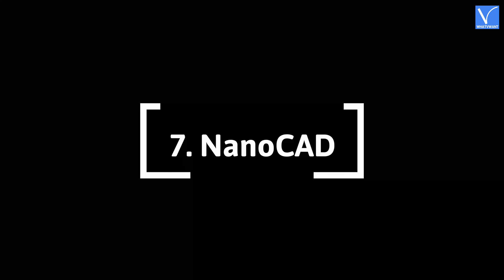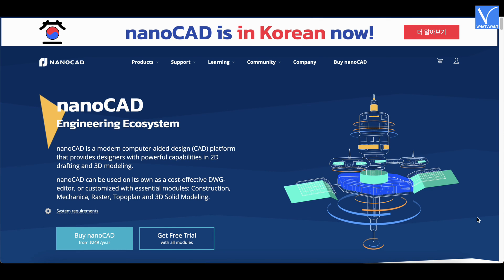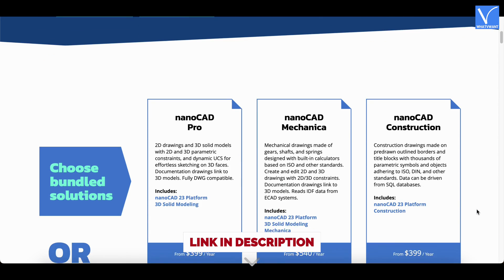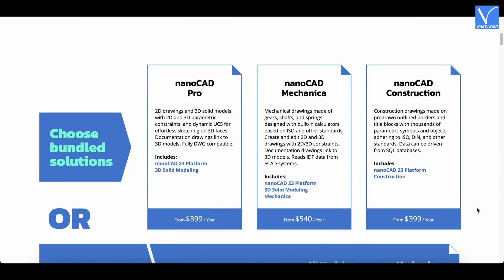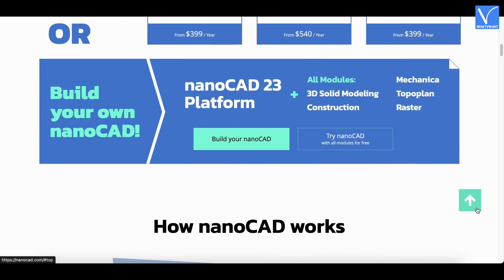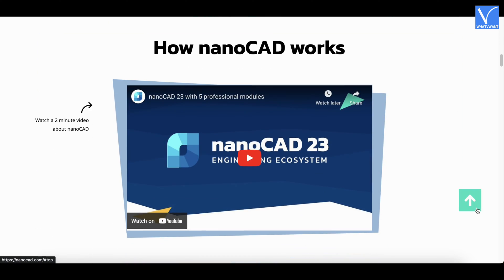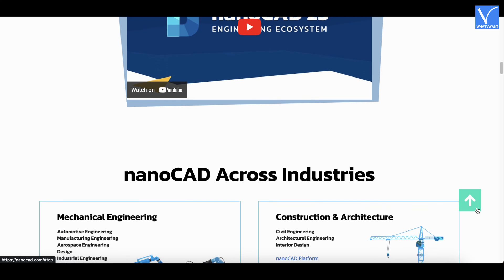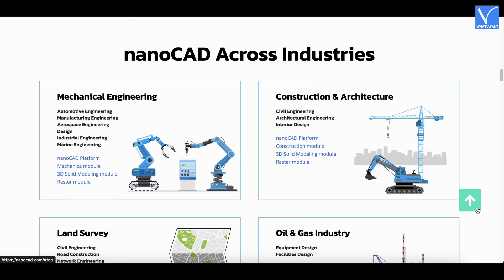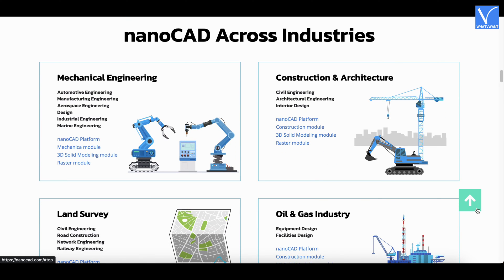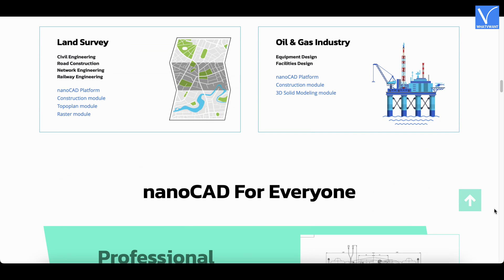Number 7: NanoCAD. NanoCAD is a budget-friendly designing software and one of the best AutoCAD alternatives. It costs less compared to AutoCAD but won't compromise in providing professional features. NanoCAD is an easy-to-use designing software that delivers the best output with higher efficiency. It is available in various versions like Plus, Pro, Mechanica, Construction, and 3D Scan.